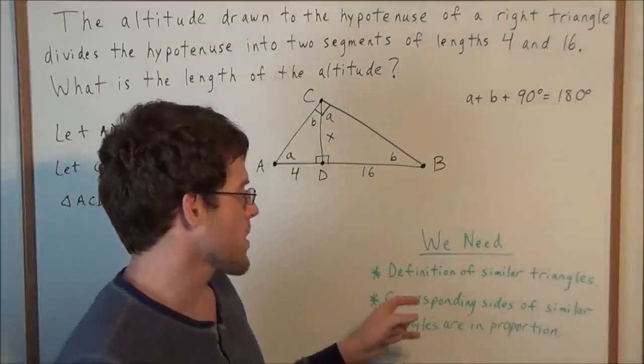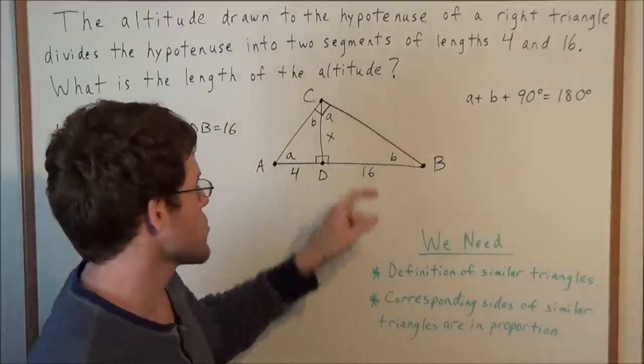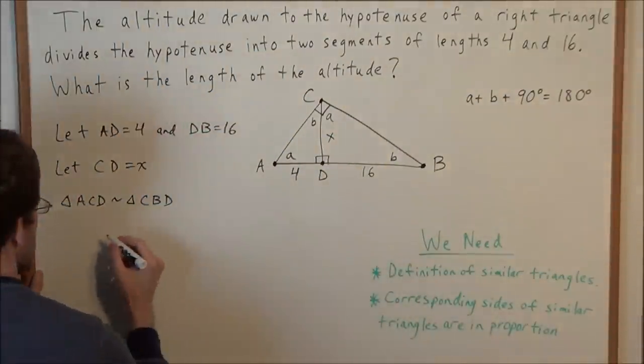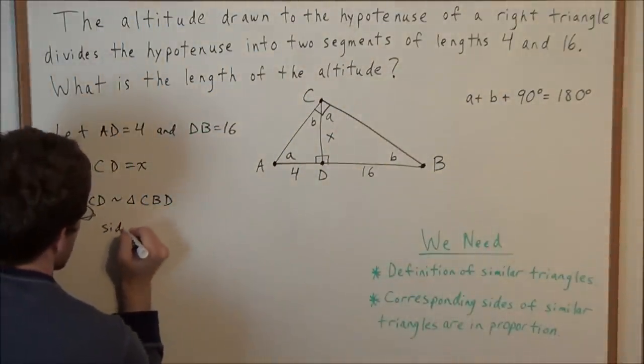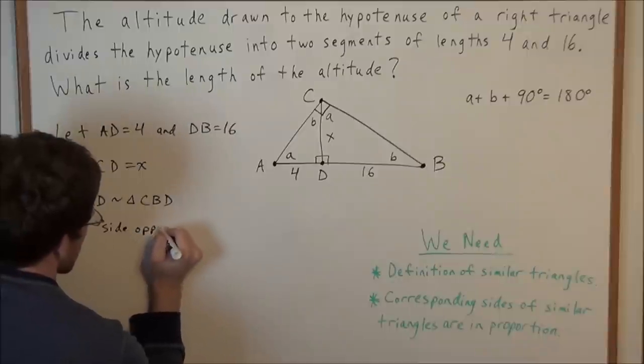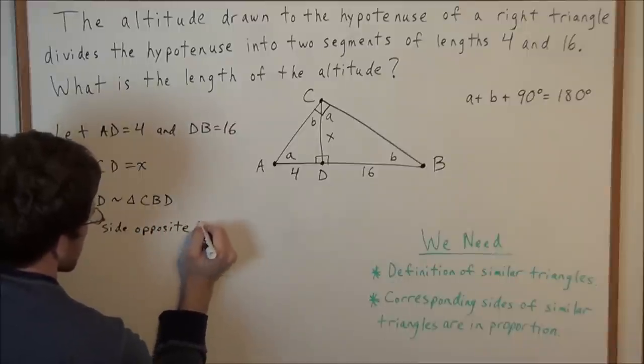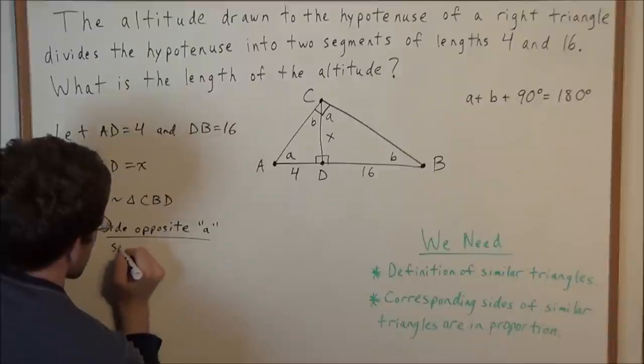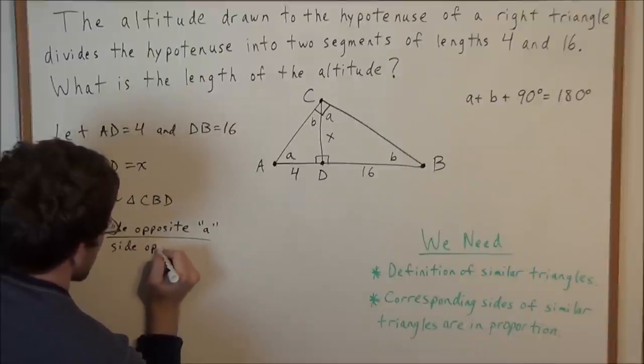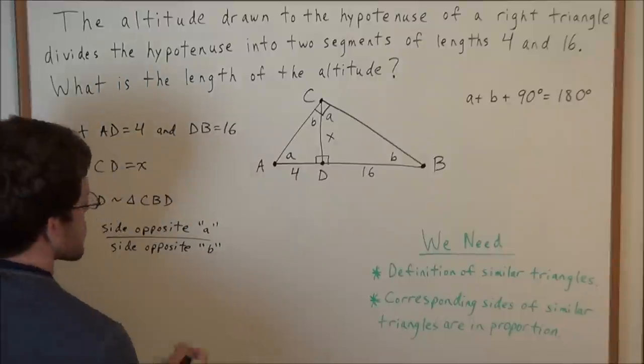So now we need to set up corresponding sides of these similar triangles. For instance, we could look at the side opposite little a divided by the side opposite little b.